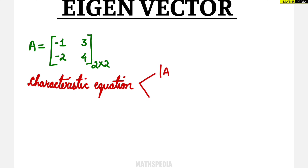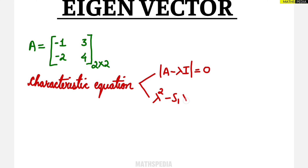The first method is to find the determinant of (A minus lambda I) equal to zero, where A is the matrix given in the question, lambda is the eigenvalue, and I is the identity matrix corresponding to the order of the matrix. For a 2×2 matrix we take the 2×2 identity matrix, equate the determinant to zero, simplify, and get the value of lambda, which is the eigenvalue.